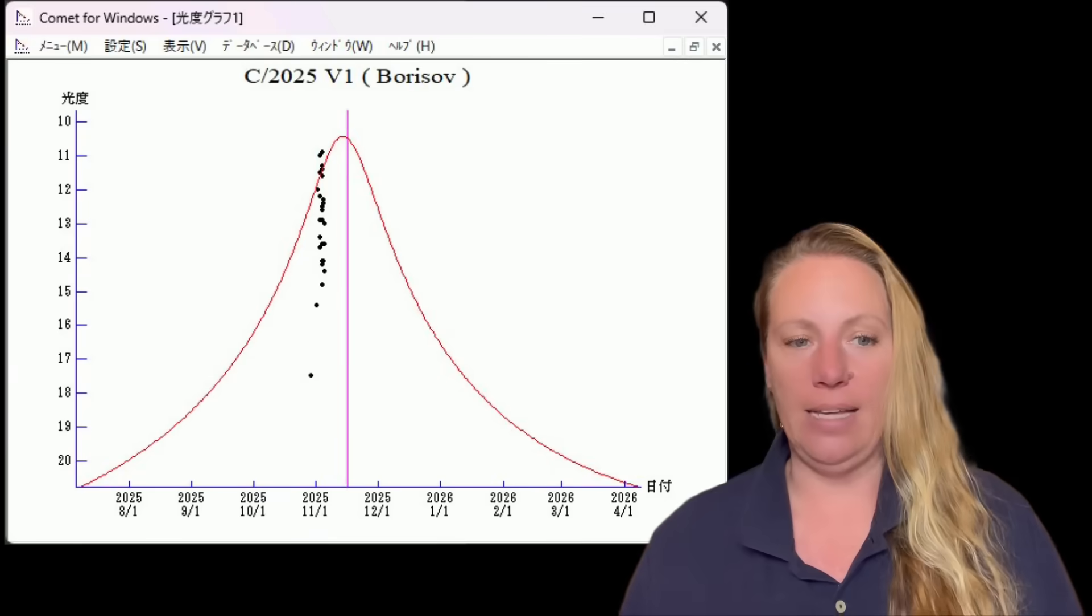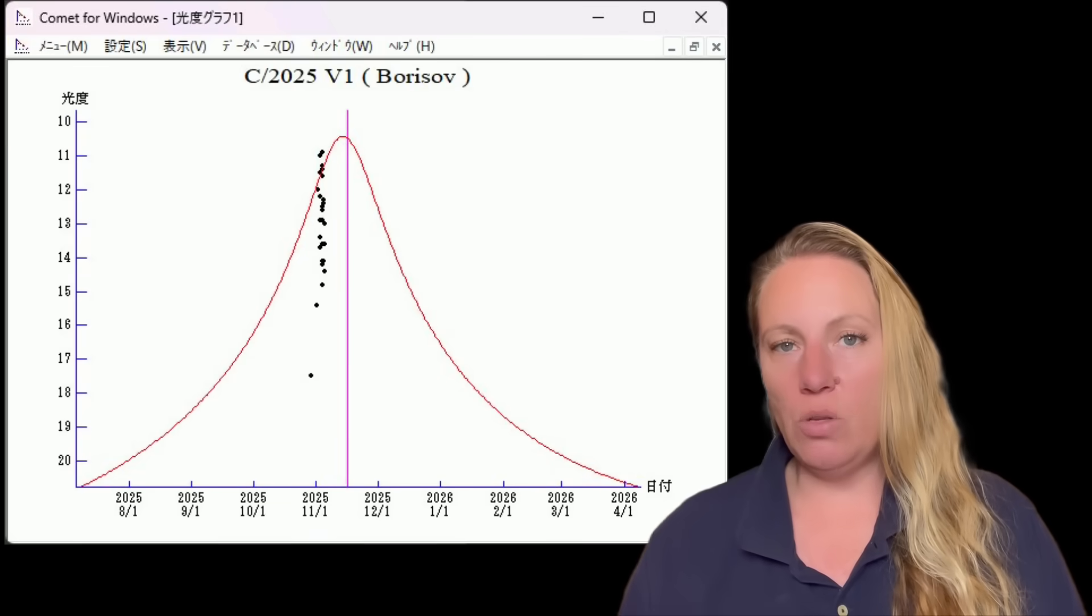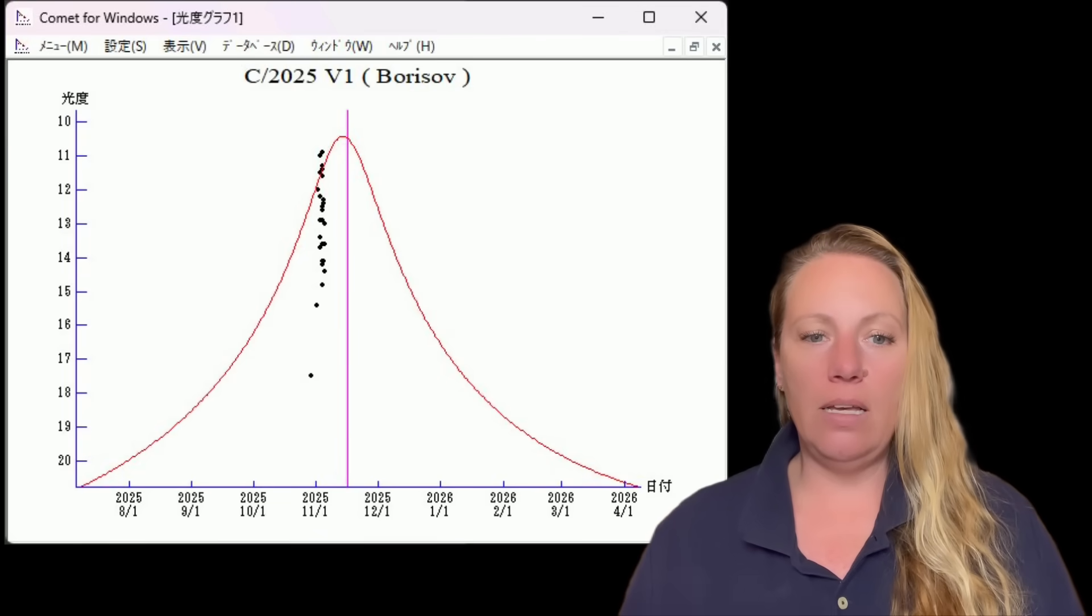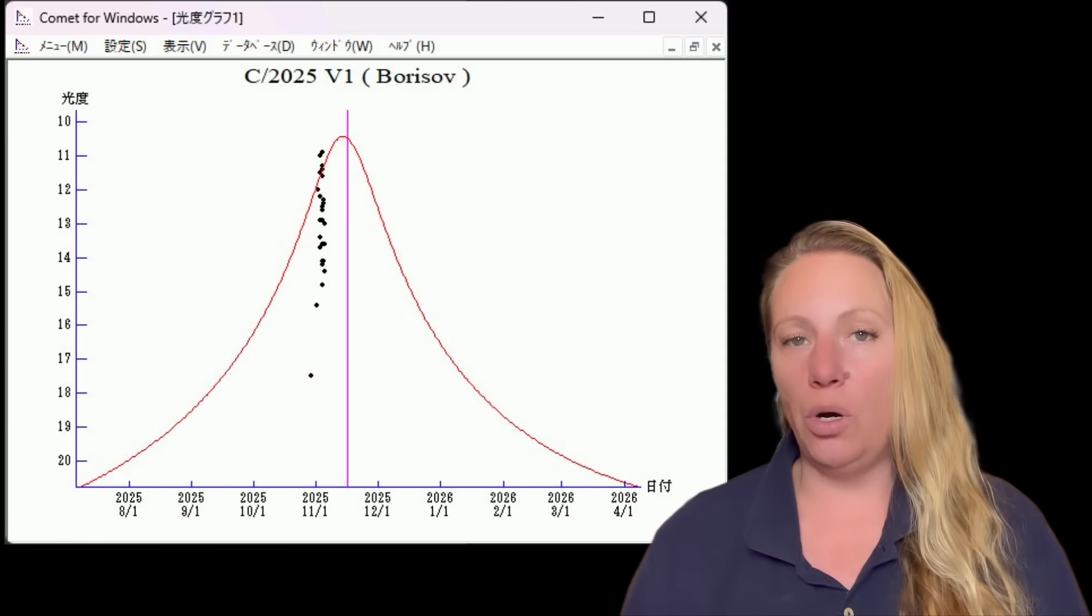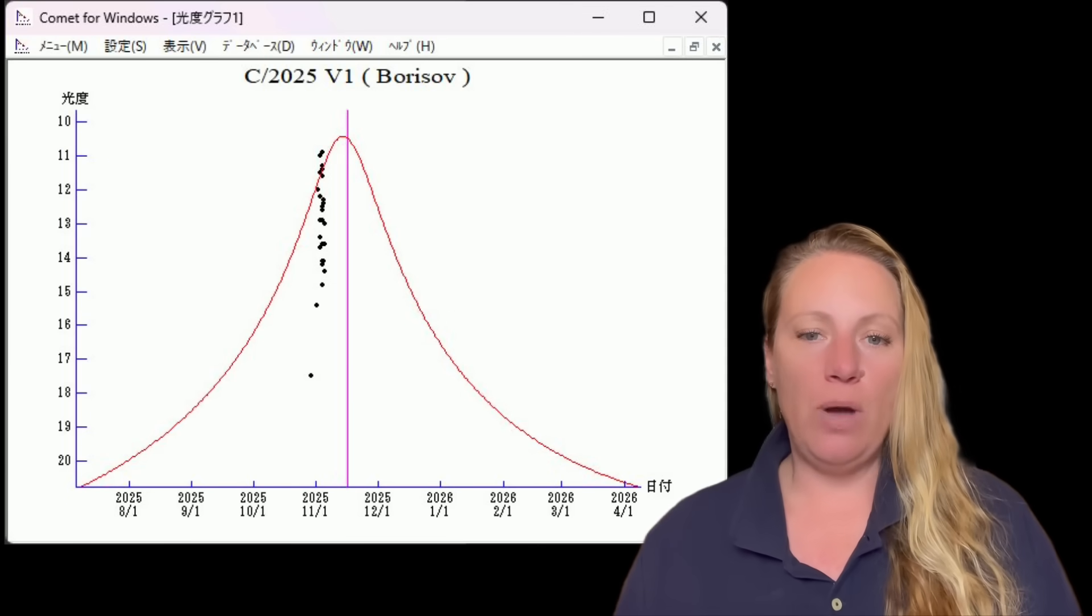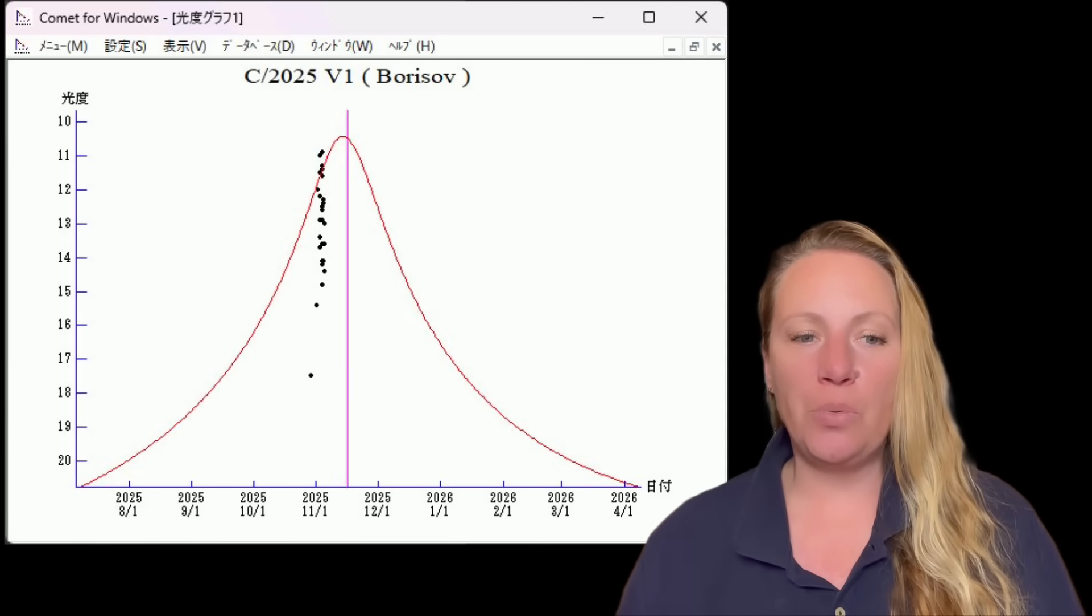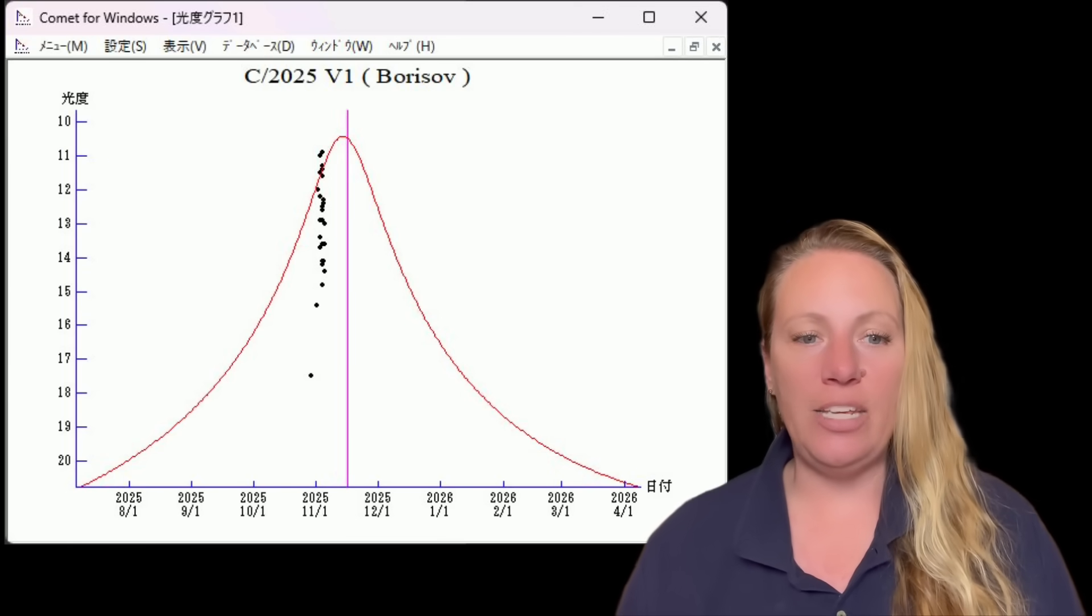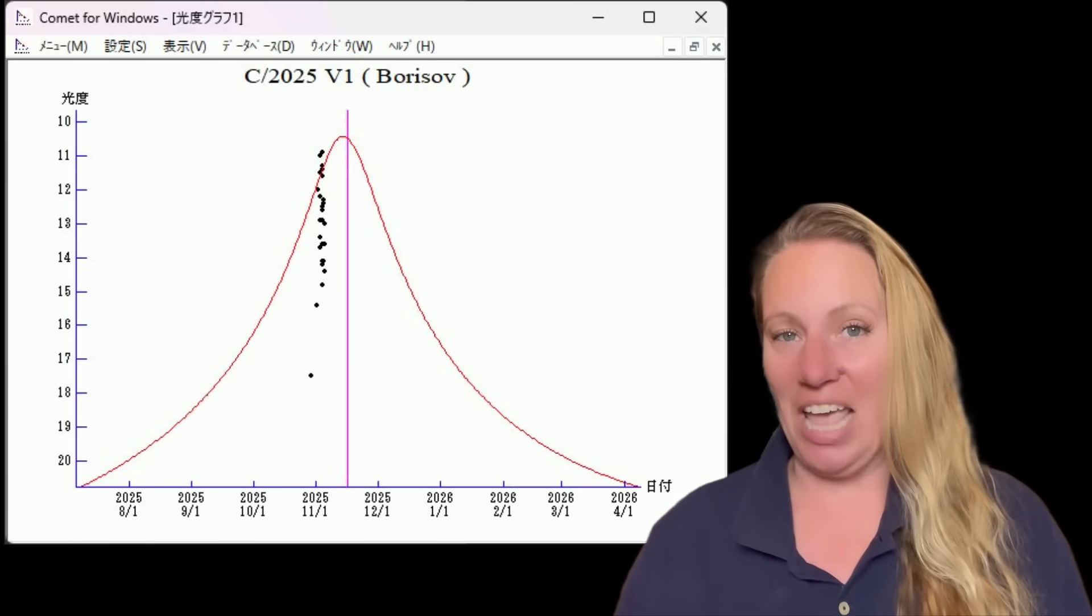Of course, everyone's looking at the sky right now to see what 3i/ATLAS is doing and to see whether they can catch a picture of 3i/ATLAS. But the closest approach to Earth is thought to occur on November 11th, when it passes at about 103 million kilometers, 0.68 AU away from us, which is a safe distance for us. So we don't need to worry, but we can see it in the sky.